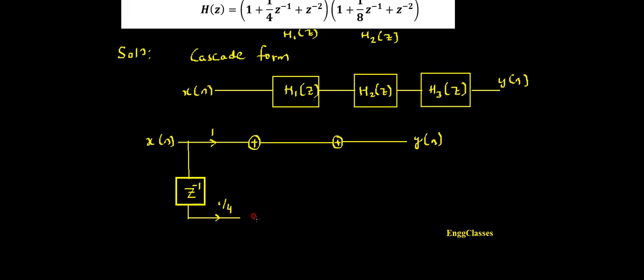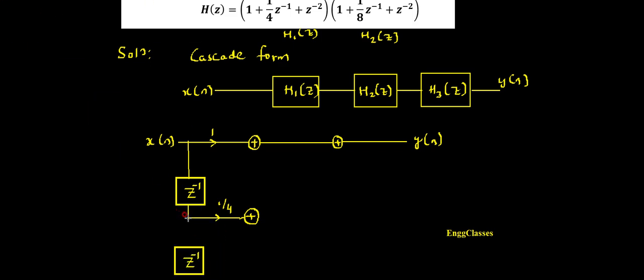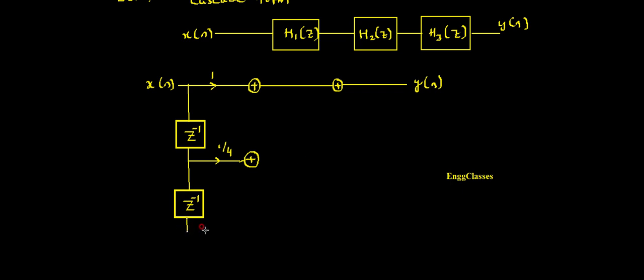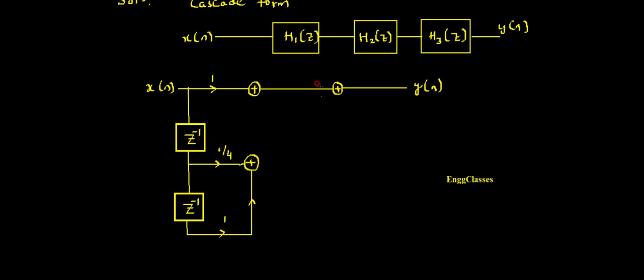I have to add that with the previous one, so I should have one adder here and those two get added up. Next I should get z to the power minus 2. To get that I need one more delay element, and after this I get z to the power minus 2. That should be added with the previous signal — so I consider a signal here and join it to the adder. The multiplying factor here is z to the power minus 2, so it just gets multiplied with 1. I add all the signals and I am done with H1(z).